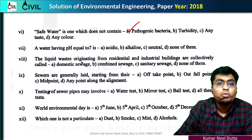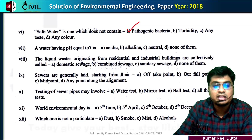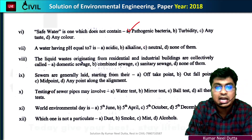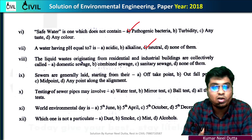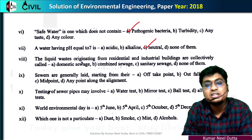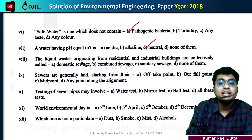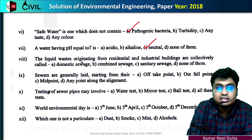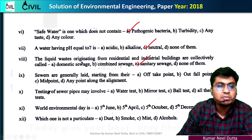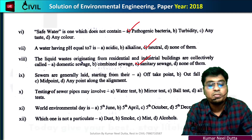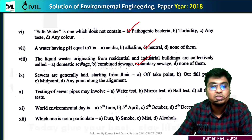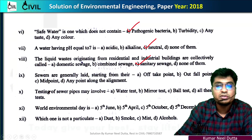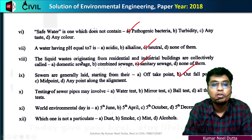Number 7: the water having pH equal to 6 is known as neutral water. Number 8: the liquid waste originating from residential and industrial buildings is known as sanitary sewage. Number 9: the sewer is generally laid starting from the outfall point — option B will be the correct.